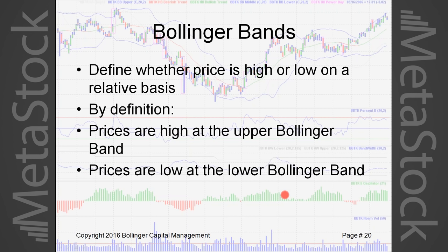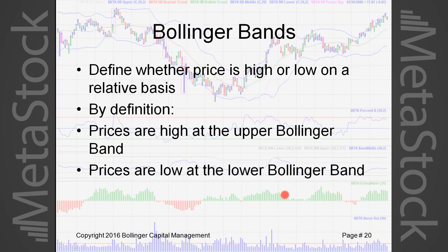This is the core concept of Bollinger Bands — please repeat after me: prices are high at the upper Bollinger Band, and prices are low at the lower Bollinger Band. It's the core concept behind not just Bollinger Bands but all trading bands — whether Donchian bands, percentage bands, or Keltner bands. The basic idea is the same for all trading bands.